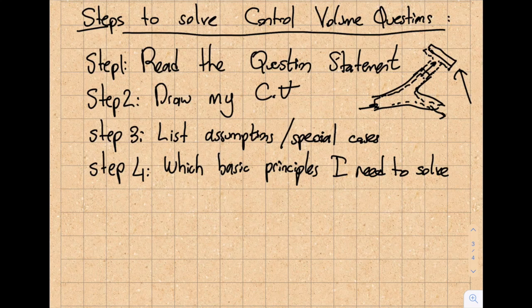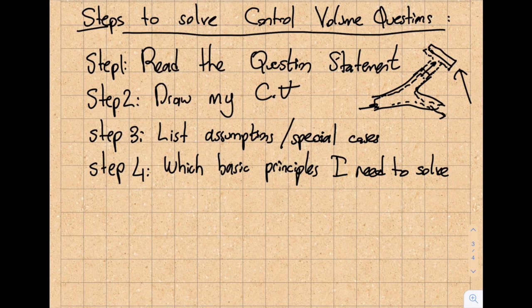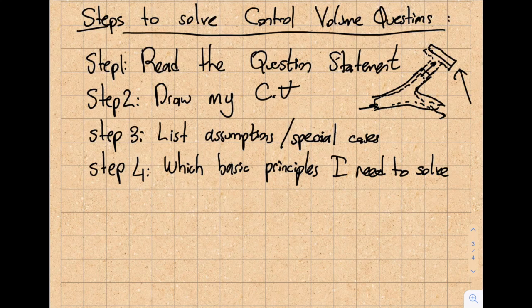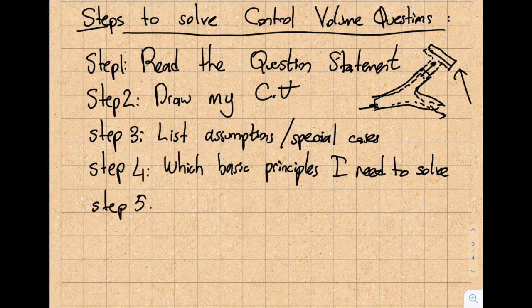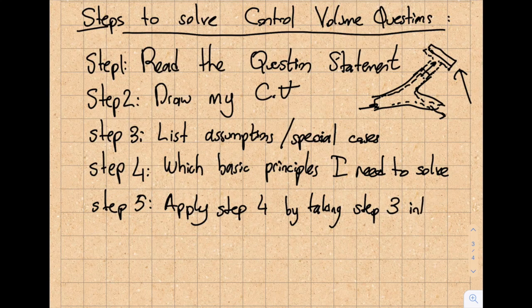Or in the future, we will talk about something called Bernoulli's equation. Do I know every single pressure value in my control volume? If not, maybe I can use the Bernoulli's equation to find the pressure, et cetera. So this is really where everything comes together, step number four.